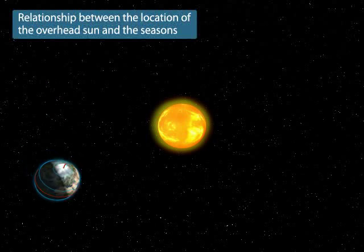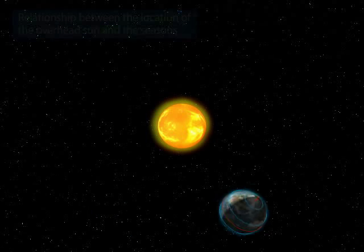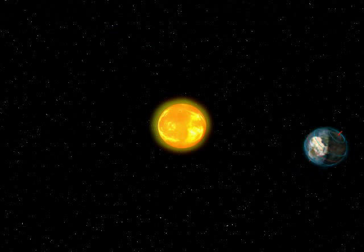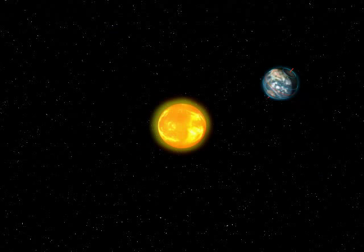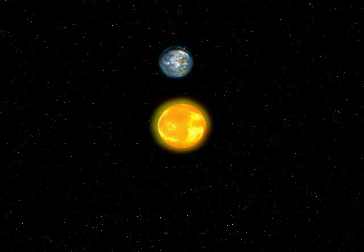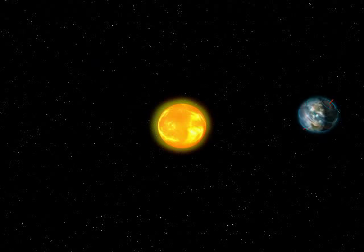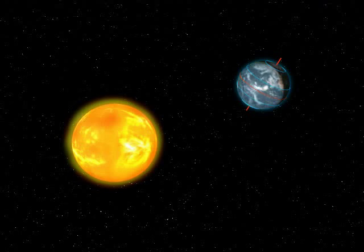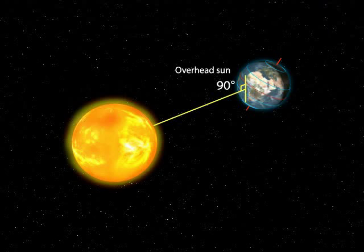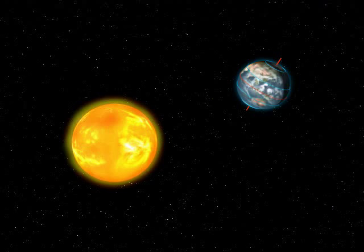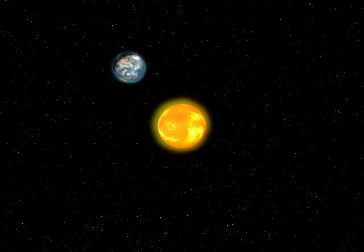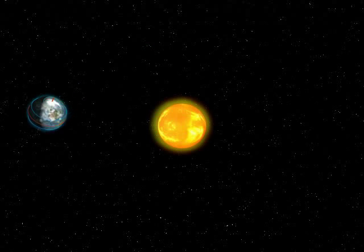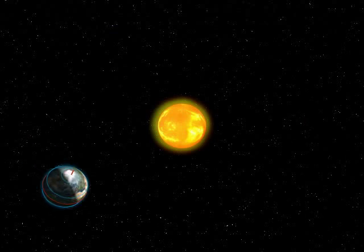The relationship between the location of the overhead Sun and the seasons: the revolution of the Earth and the tilting of the axis results in different angles of the Sun during different periods. When the Sun is directly overhead, we call this the overhead Sun. At this time, the Earth's surface and the midday Sun form a 90-degree angle. Different locations of the overhead Sun result in variations in the amount of solar radiation received in different areas and at different periods.